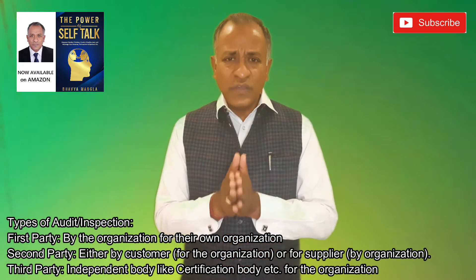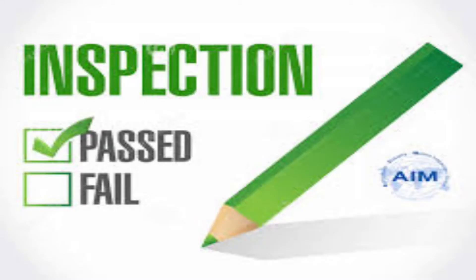To talk specifically about the key differences between audit and inspection, I would like to take the simple example of a pen, assuming we are doing an incoming inspection. Let us assume that 100 pieces were received from a particular supplier, and based on a sampling plan, we picked up 10 pieces to see whether they conform to the specification or not.